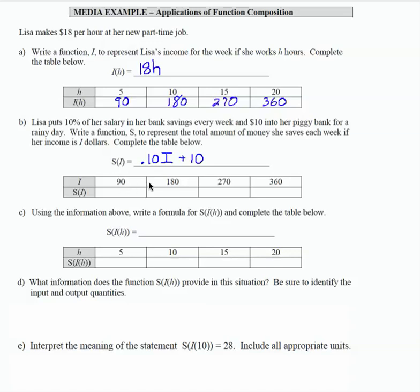Now looking at this series of inputs, plugging those in for I, so 90 times .10 plus 10 will give us 19, 180 times .10 plus 10 is 28,